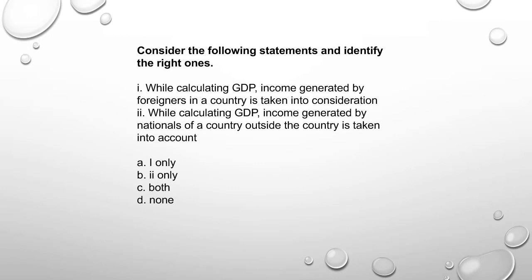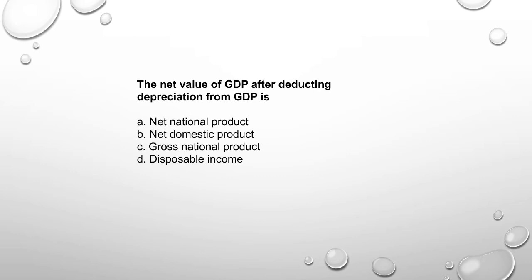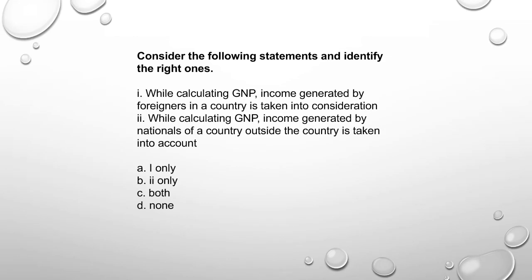Next: Consider the following statements and identify the right ones. While calculating GDP, income generated by foreigners in a country is taken into consideration — yes, income generated by a foreigner inside India is considered in GDP, as GDP covers the domestic territory. The net value of GDP after deducting depreciation is Net Domestic Product, NDP.